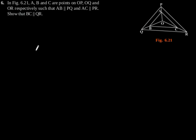Exercise 6.2, question number 6. In figure 6.21, A, B, and C are points on OP, OQ, and OR respectively, such that AB is parallel to PQ and AC is parallel to PR. Show that BC is parallel to QR.